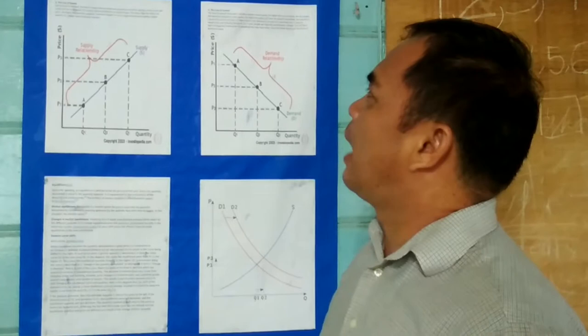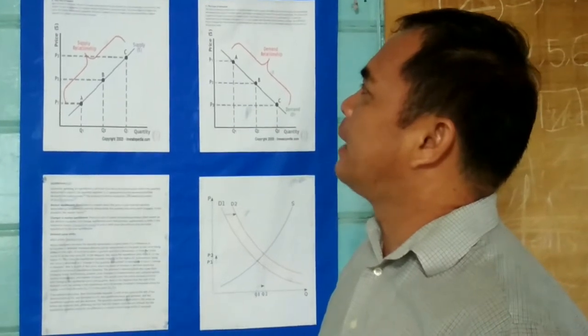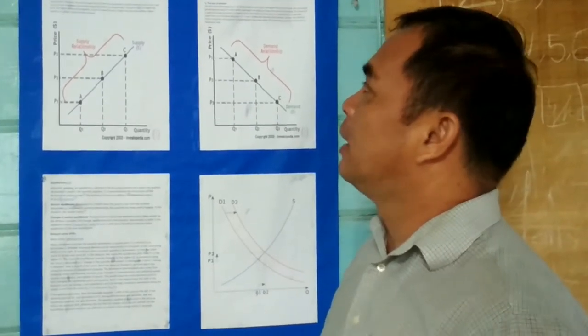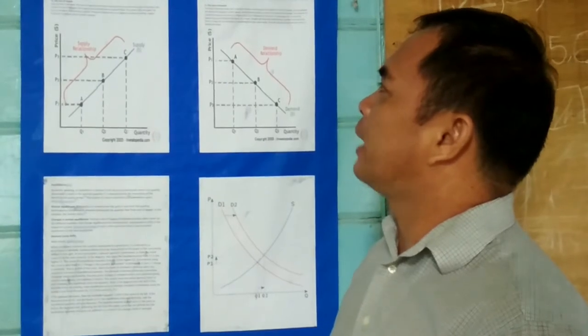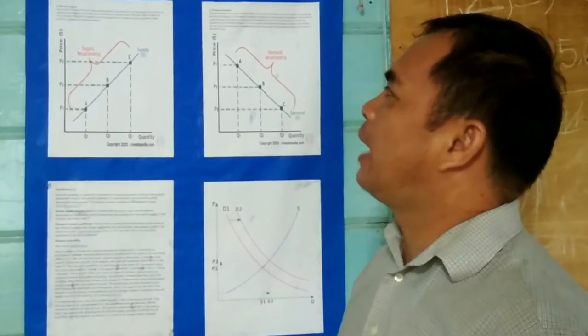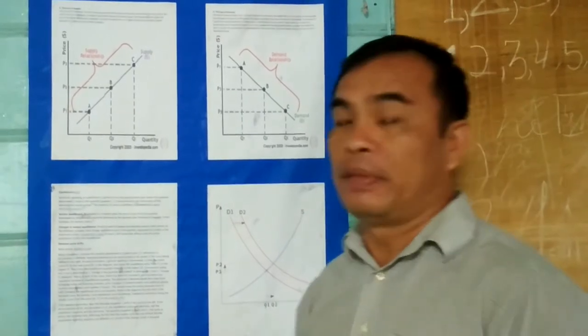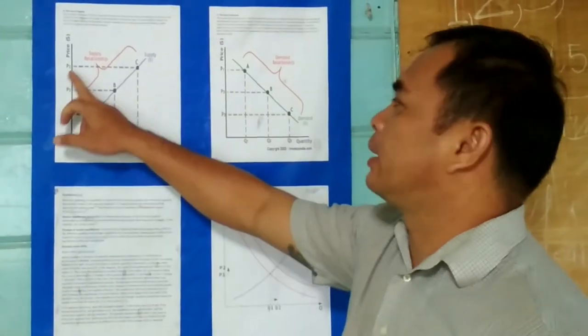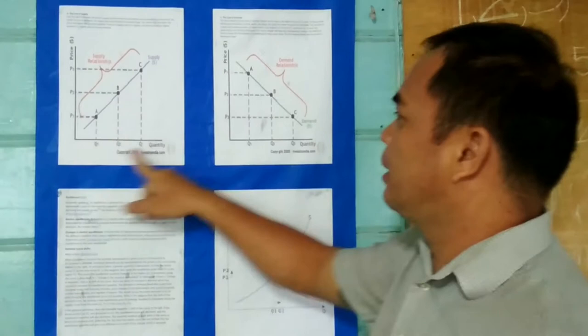This means that the higher the price, the higher the quantity supplied. Producers supply more at a higher price because selling at a higher quantity at a higher price increases revenue. So as shown here, the price is high, the quantity is high.